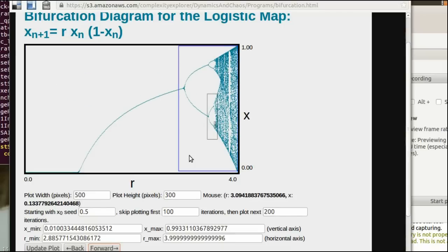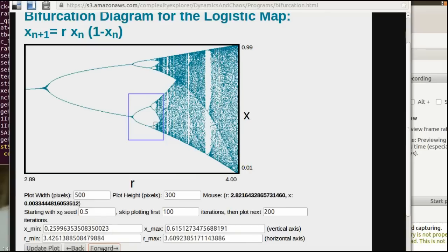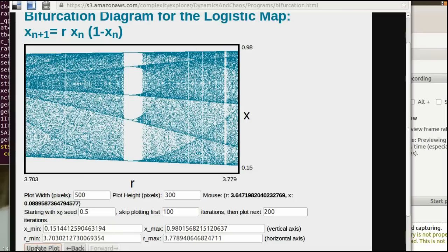Alright. So let me zoom in here. This is the bifurcation diagram now from about three up until four. And let me zoom in on a different rectangle. I'm going to zoom in here. So I'll do that. Hit update plot.